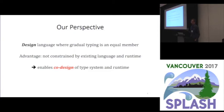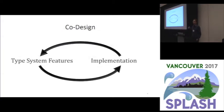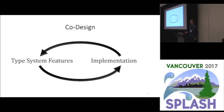This may not help with existing languages, although it may provide some insights, but it definitely helps with designing new languages. In co-design, we start with some features that we want our language to have, and that informs us what we need to implement. On the other hand, we know how to implement some things efficiently, and we know that some things we can't really implement efficiently. That informs us what type system features should be more prominent parts of our language and which we may need to restrict somewhat, and that way we get an efficient language.